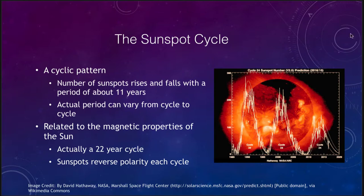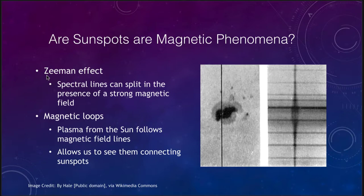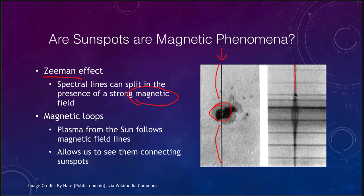How do we know sunspots are magnetic? Two key things. First is the Zeeman effect, which says that spectral lines can be split in the presence of a strong magnetic field. When we take a spectrum along a line that passes through a sunspot, we see just one spectral line away from the sunspot's magnetic field, but it splits into three lines right at the magnetic field. The amount of splitting also lets us measure the strength of the magnetic field.